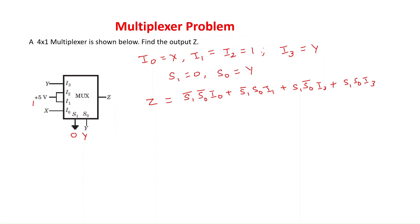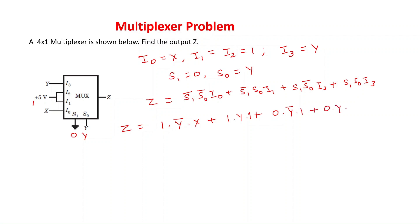I will substitute the given information into the expression to get the output. Z = S1' (which is 0' = 1) · S0' (which is Y') · I0 (which is X) + S1'·S0 (Y)·I1 (1) + S1 (0)·S0'·I2 (1) + S1 (0)·S0 (Y)·I3 (Y).